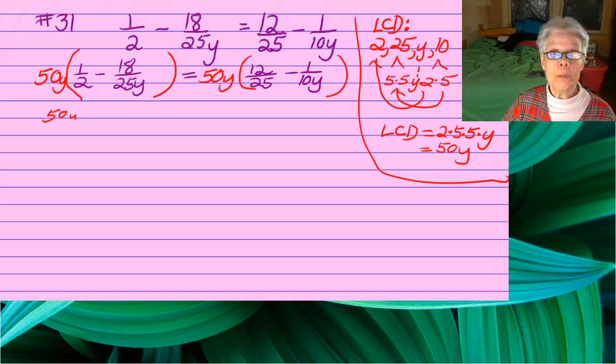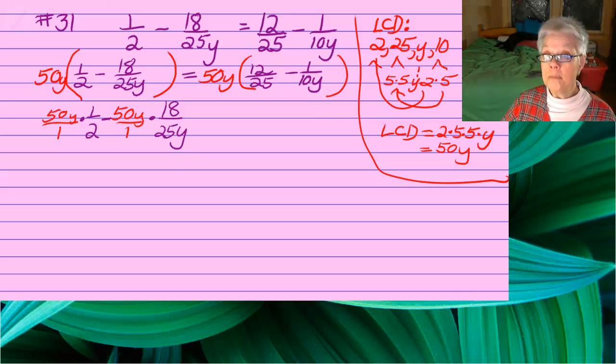Okay, now distribute. I'm going to turn 50y into a fraction because I'm multiplying fractions. That makes it easier to cancel. So I'll have 50y over 1 times 1 half minus 50y over 1 times 18 over 25y equals 50y over 1 times 12 over 25 minus 50y over 1.